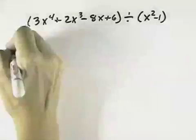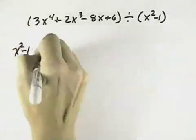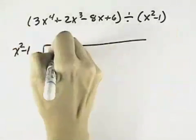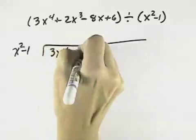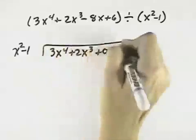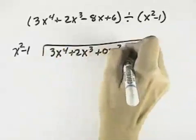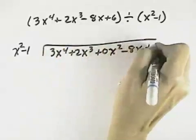Divide as indicated. Well, what we'll do is long division of x squared minus 1, and we'll divide that into 3x to the 4th plus 2x cubed. Since there's no x squared term, I'll hold the place by 0x squared minus 8x plus 6.